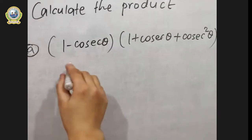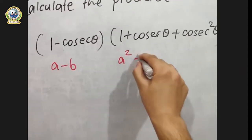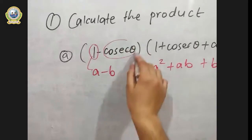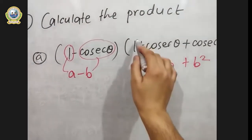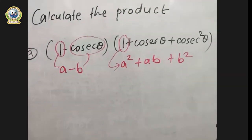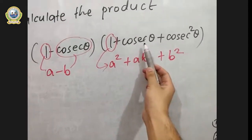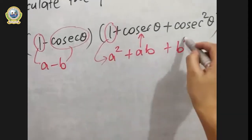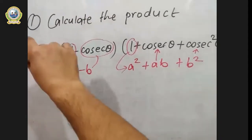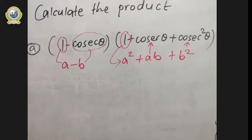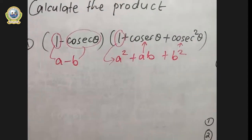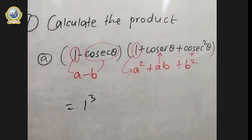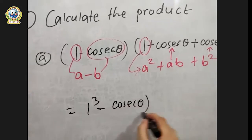There are two ways of doing it: either directly multiply, or use a formula. Let us compare this with the standard formula. It looks similar to (a - b)(a² + ab + b²). Let a = 1 and b = cosθ. Then a² = 1, ab = cosθ, and b² = cos²θ — which exactly matches our expression. This is the formula for a³ - b³. So the answer is directly a³ - b³ = 1³ - cos³θ = 1 - cos³θ.